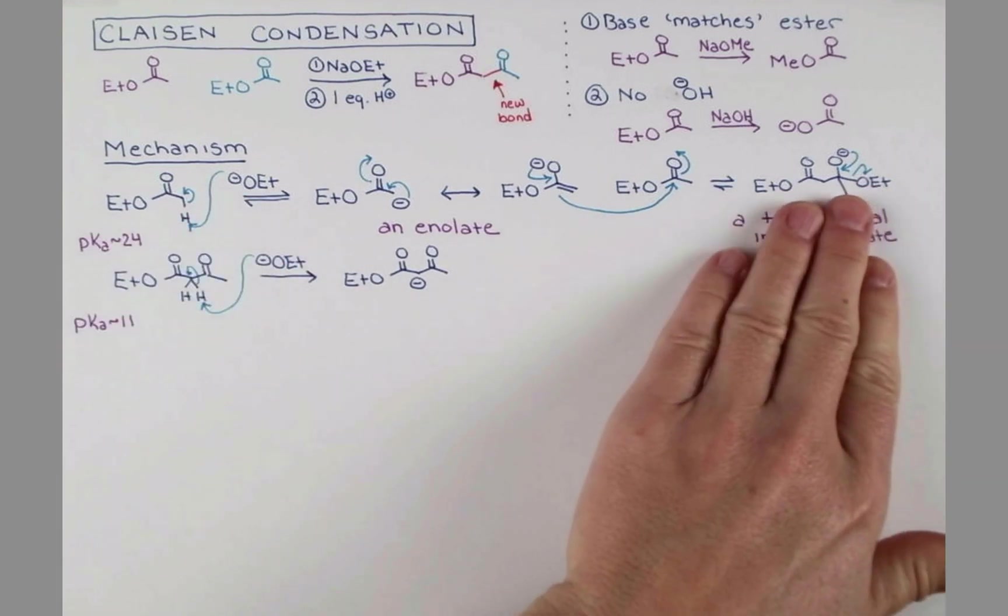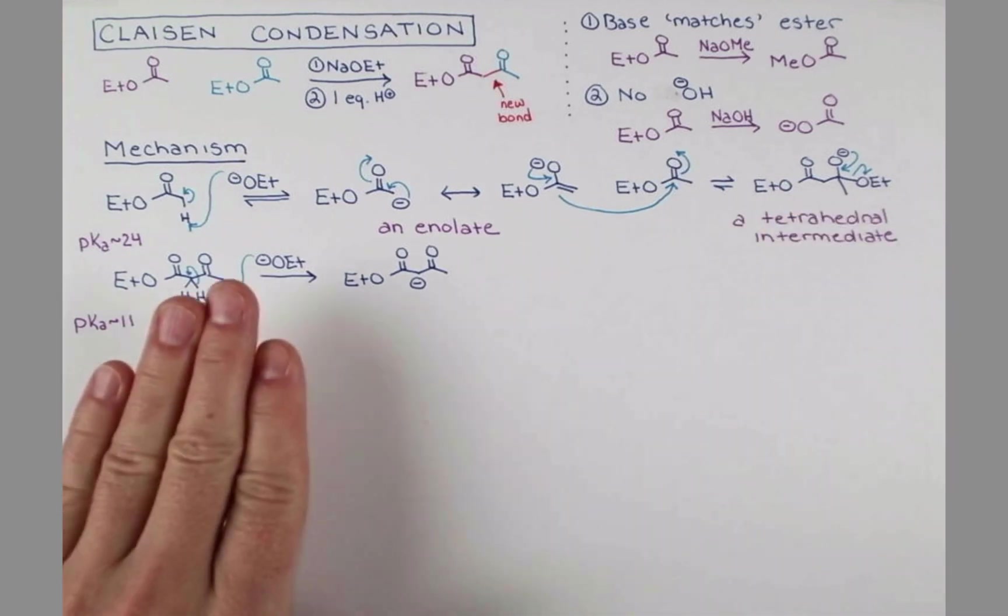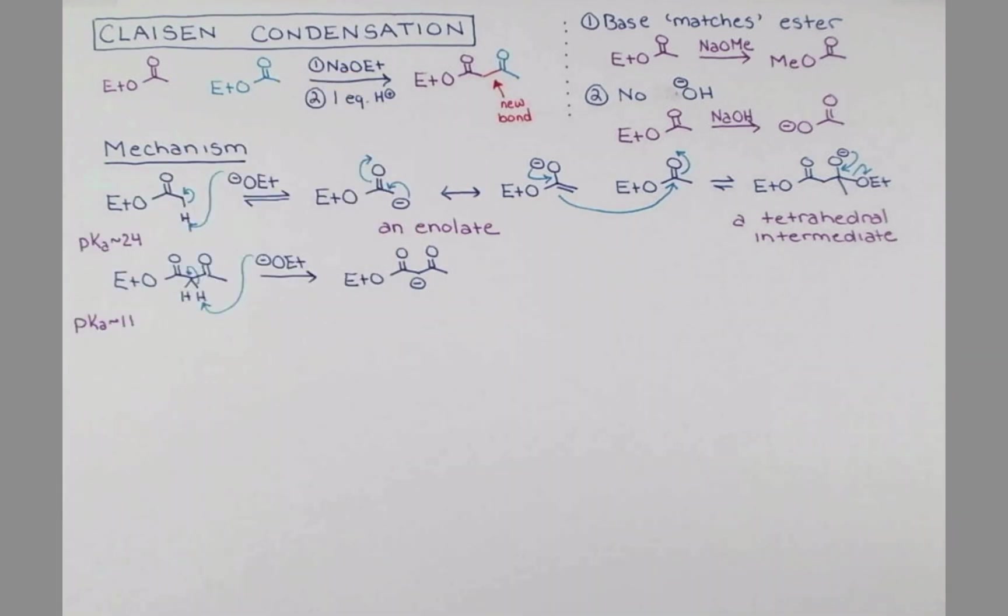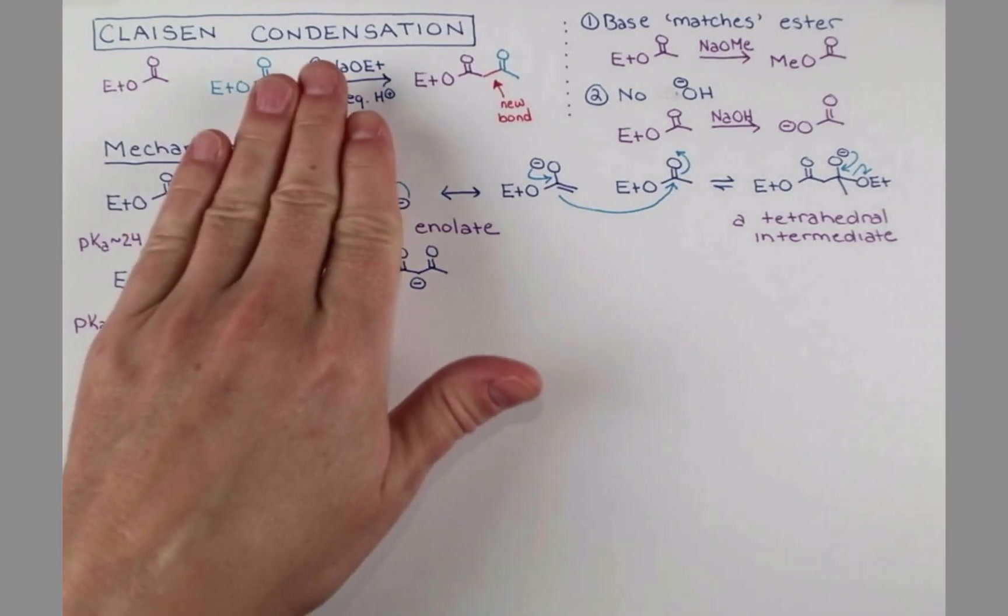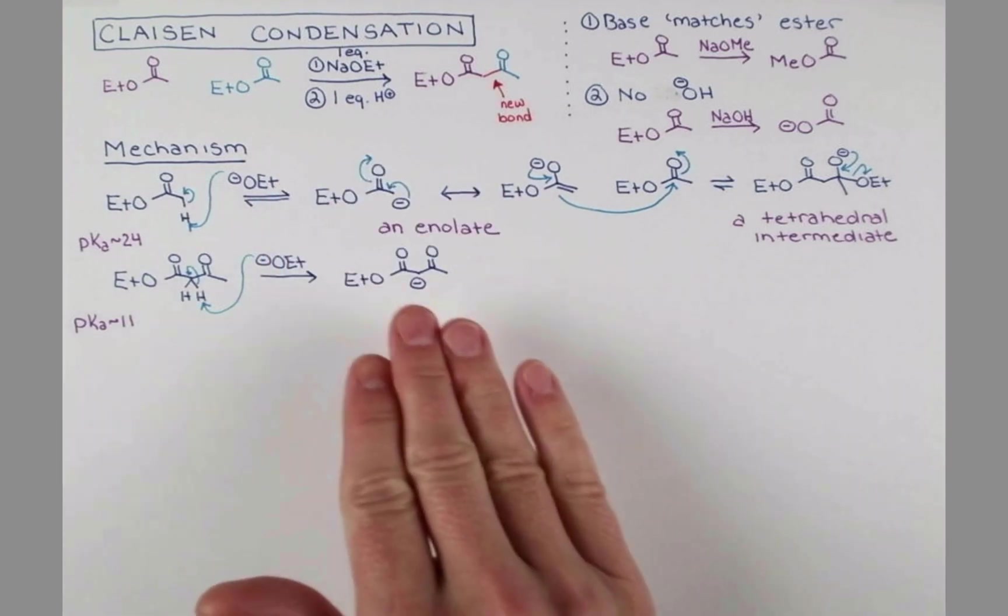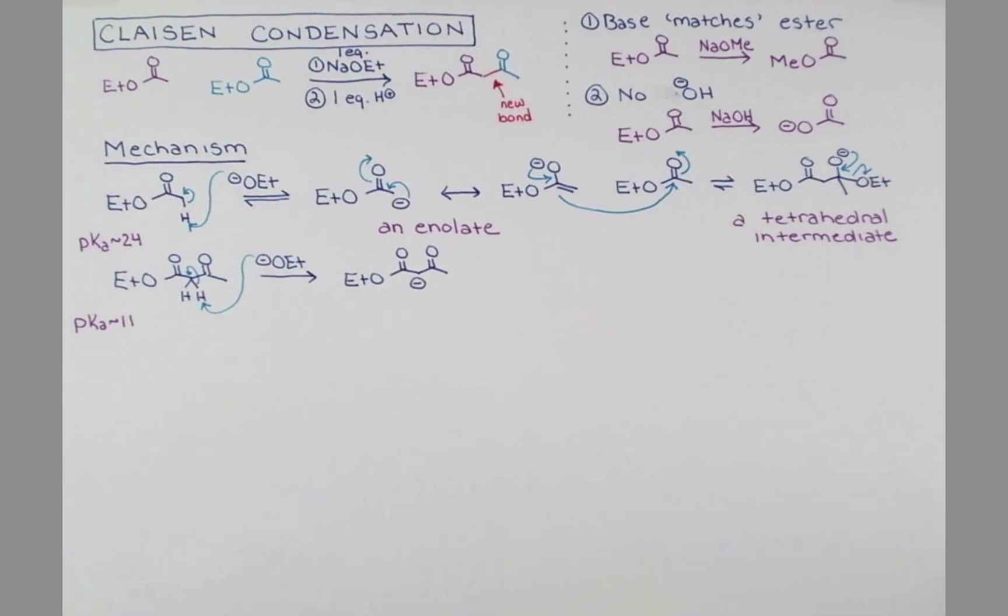In this step, we generate a molecule of OET-, but then we have to use it up completely. So this reaction is not catalytic. It actually requires one full equivalent of sodium ethoxide. And this is why we need a second step where we add in one equivalent of acid, not enough to cleave our ester, just enough to neutralize the negative charge of this enolate and get our final product.